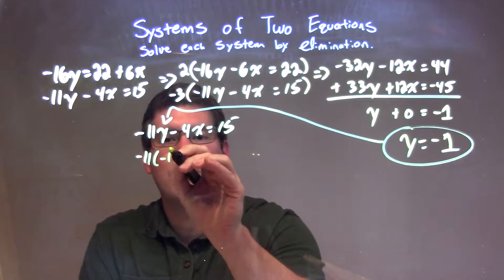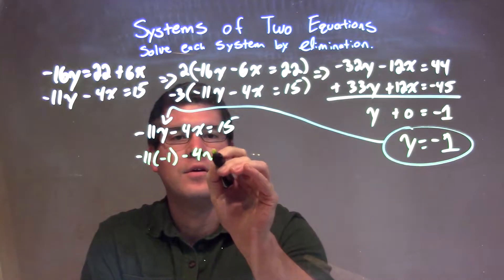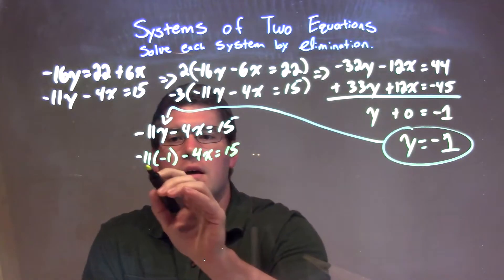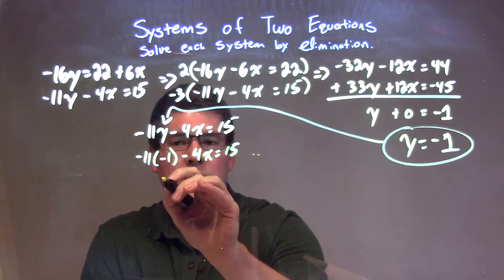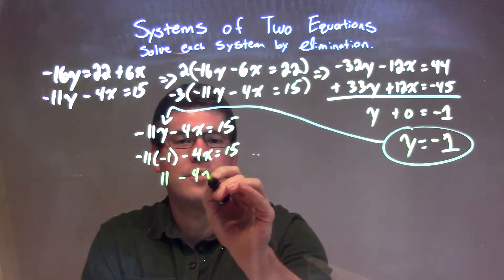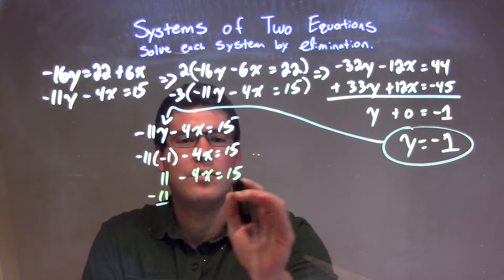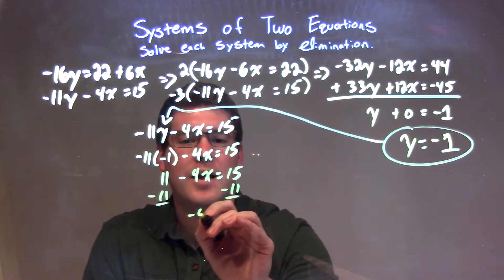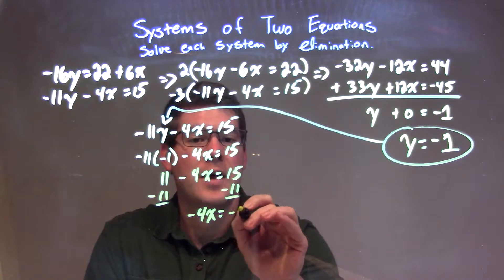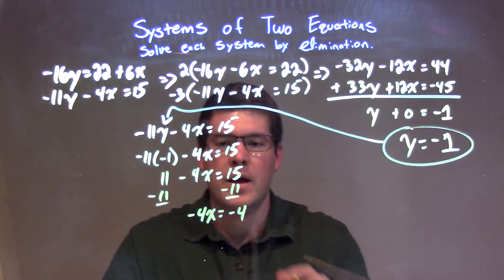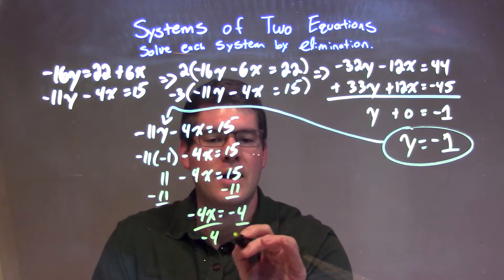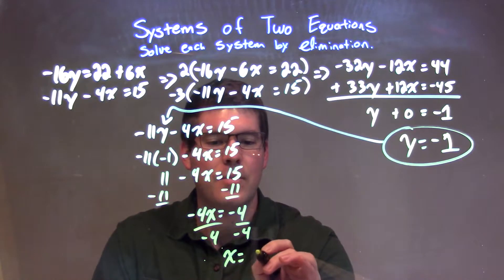Negative 1 goes in for y. So we've got negative 11 times a negative 1 minus 4x equals 15. Negative 11 times a negative 1 is a positive 11. So positive 11 minus 4x equals 15. I want to subtract 11 from both sides, giving me negative 4x equals a negative 4.